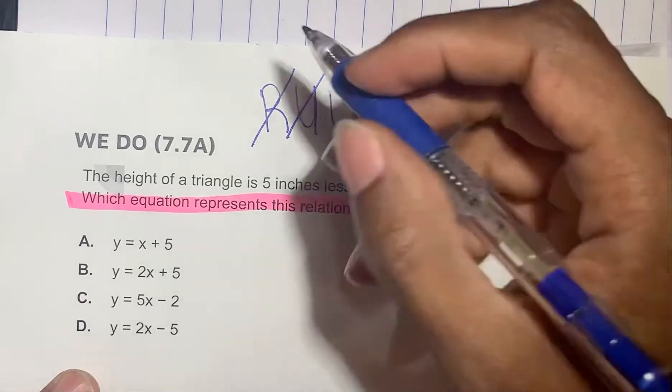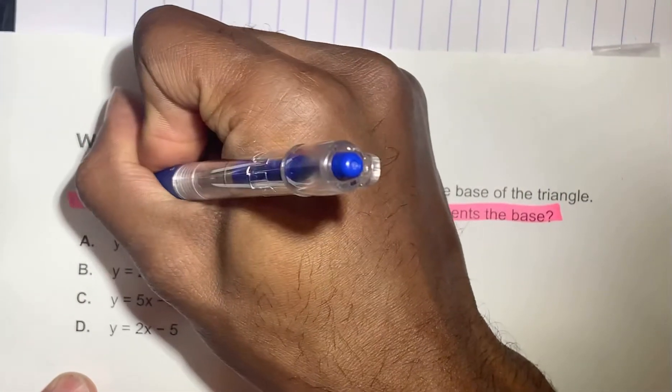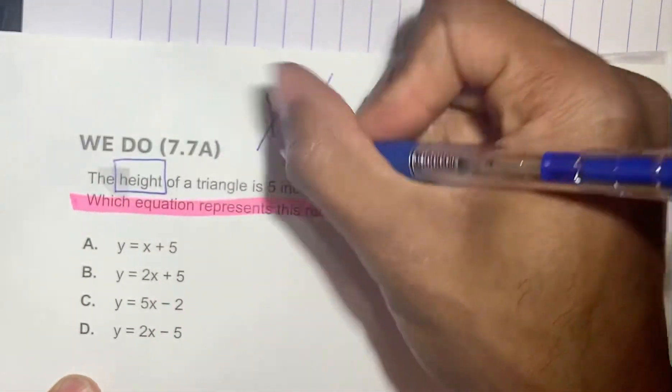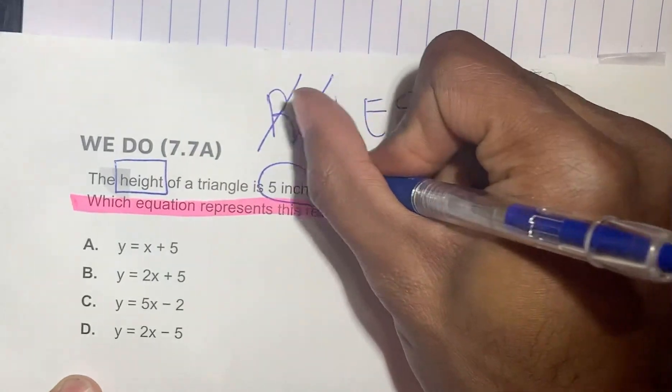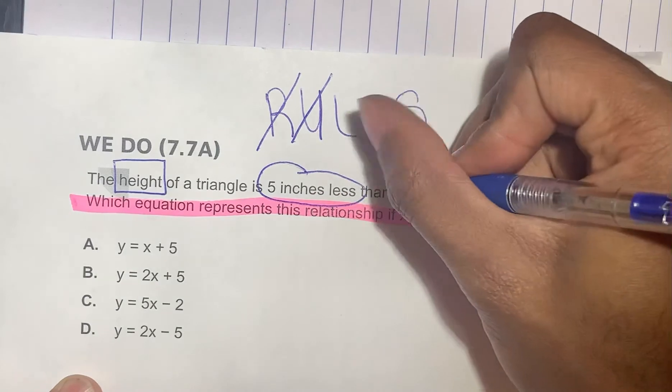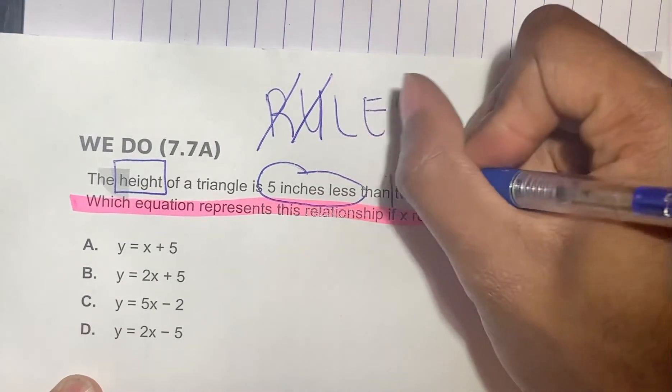Now we have the label and annotate. The height h of a triangle is five inches less. So five inches less than twice the base.